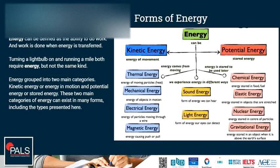Elastic energy is a form of stored energy in objects that are stretched. Nuclear energy is the energy stored in the center of atoms, in the nucleus of atoms. And gravitational potential energy is the energy stored in an object when it is above the Earth's surface due to its position.